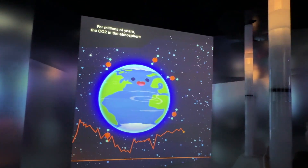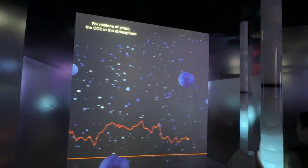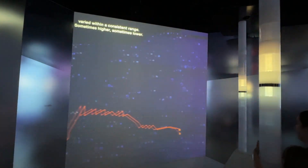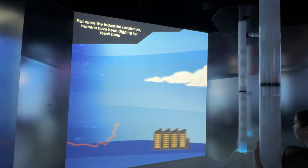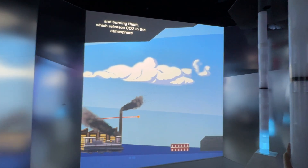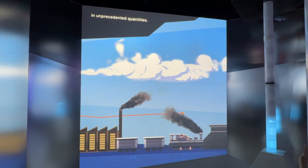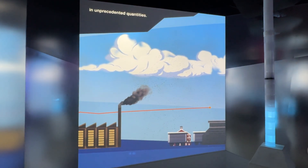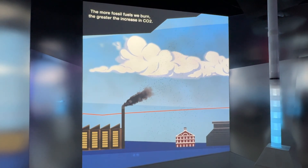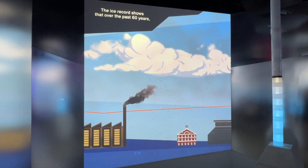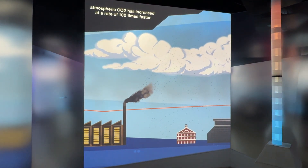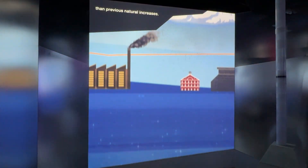For millions of years, the CO2 in the atmosphere varied within a consistent range, sometimes higher, sometimes lower. But since the Industrial Revolution, humans have been digging up fossil fuels and burning them, which releases CO2 into the atmosphere in unprecedented quantities. The more fossil fuels we burn, the greater the increase in CO2. The ice record shows that over the past 60 years, atmospheric CO2 has increased at a rate 100 times faster than previous natural increases.